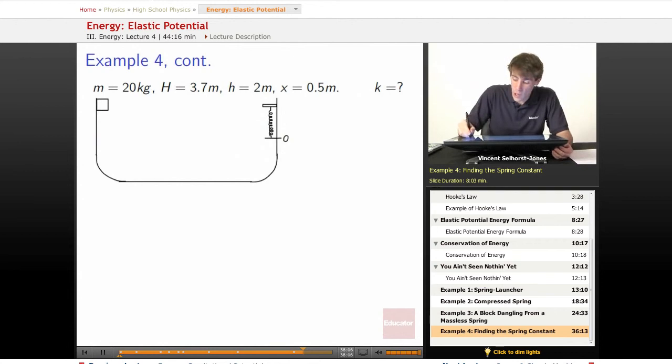Alright, so we know that our mass is equal to 20 kilograms. The height that it starts at is 3.7 meters. The height that the bottom of the spring is at is 2 meters. And the x that it gets compressed is 0.5 meters. And now we want to know what is the k involved.